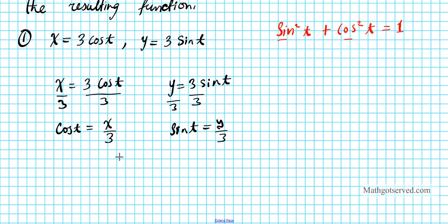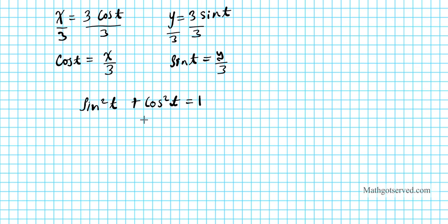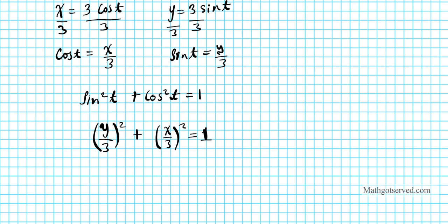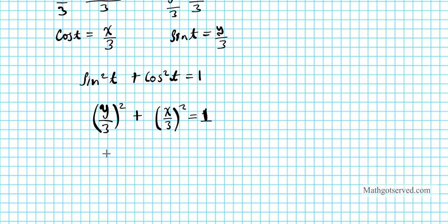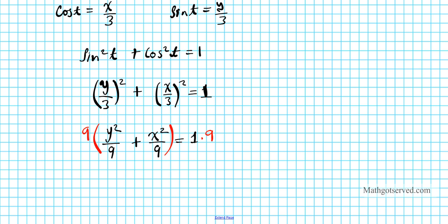Since we know that sine squared t plus cosine squared t equals 1, we substitute these values for sine and cosine. So we get y over 3 squared plus x over 3 squared equals 1, which simplifies to y squared over 9 plus x squared over 9 equals 1. Multiplying both sides by 9 gives us y squared plus x squared equals 9.